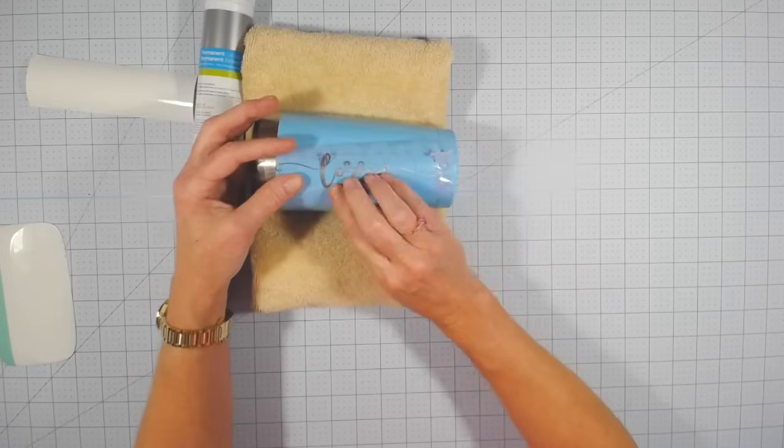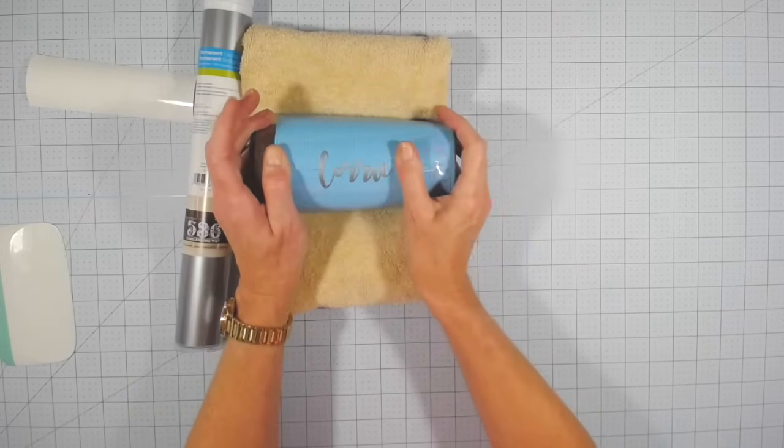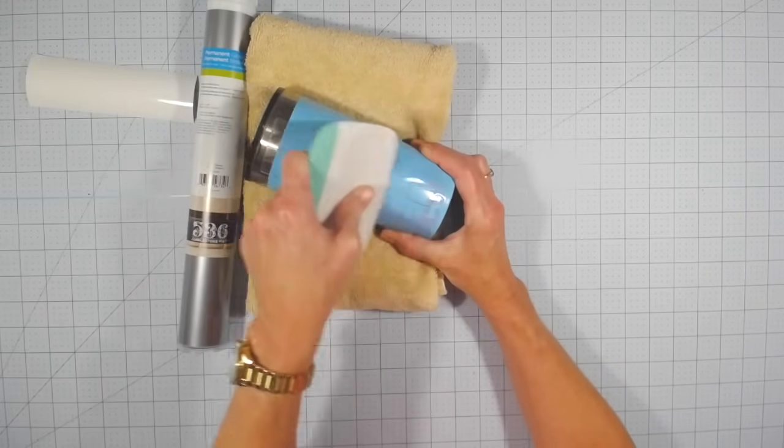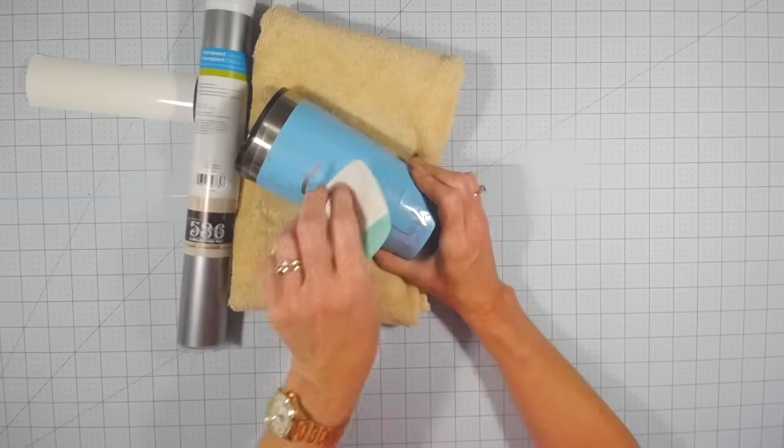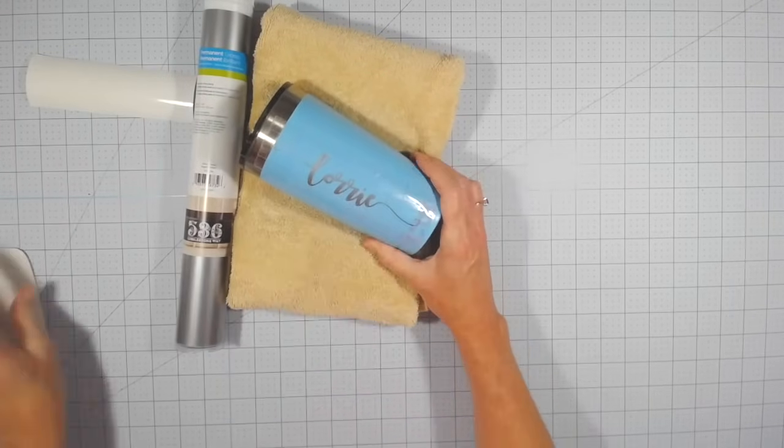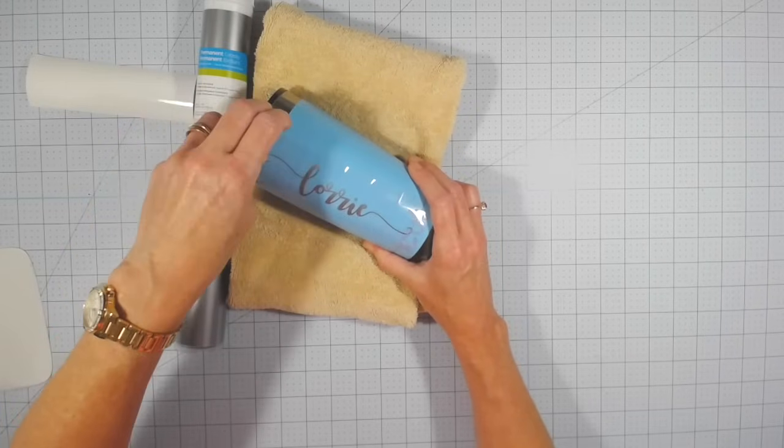But you just want to, I find it easiest to put it down in the middle and then spread it out from the middle outwards. And then I'm just going to use my scraper again. You could just use your fingers if you want but I find the scraper works just fine. And then you're going to peel that transfer tape off.